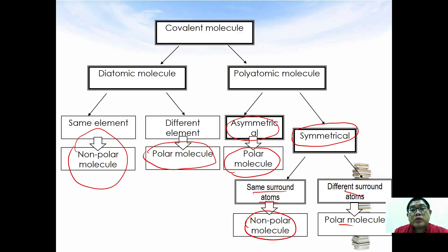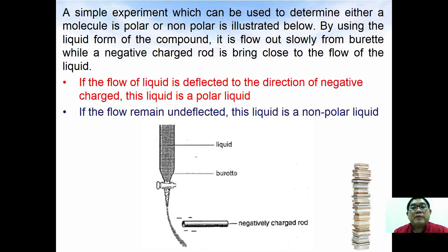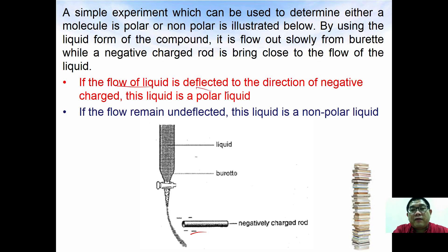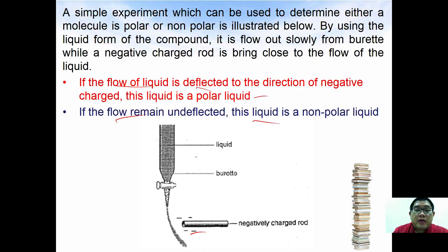Even without the molecular structure, we can determine polarity experimentally. In a simple lab experiment, a covalent liquid flows from a burette while a negatively charged rod is brought close to the stream. If the stream deflects toward the charged rod, the liquid is polar. If the stream remains undeflected, the liquid is non-polar. That covers polarity of bonding.